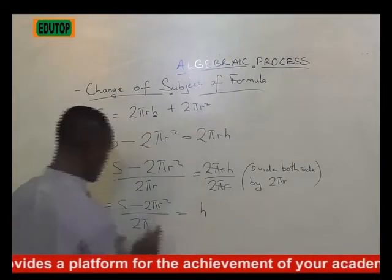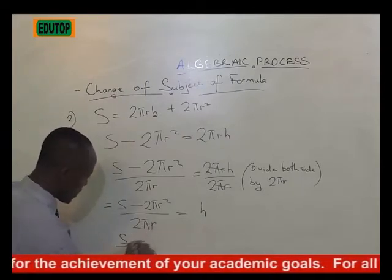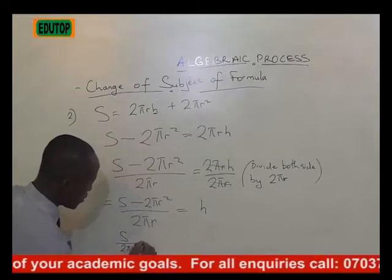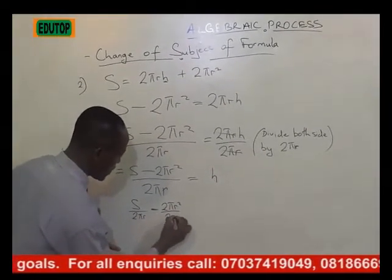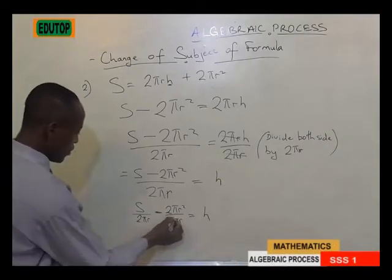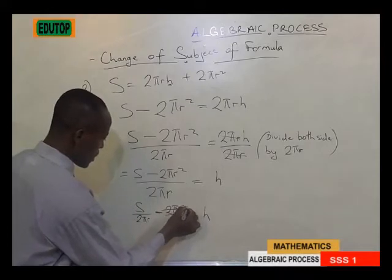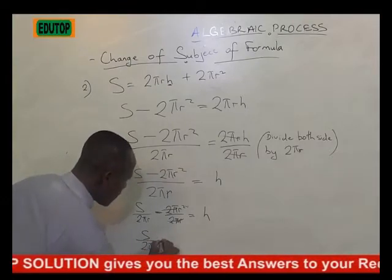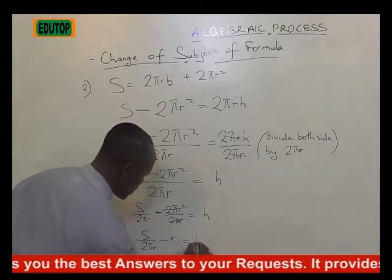We can break this further to be S divided by 2 pi R. We cancel the 2 pi and the R, noting that R divided by R is 1, not 2 minus 1. So we will now be having S all over 2 pi R minus R is equal to H.